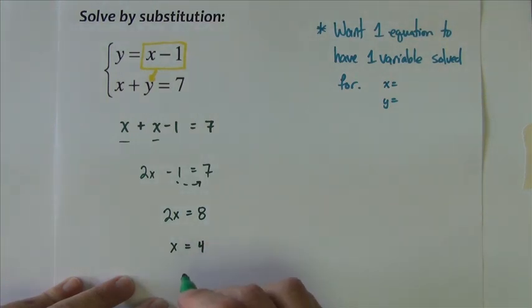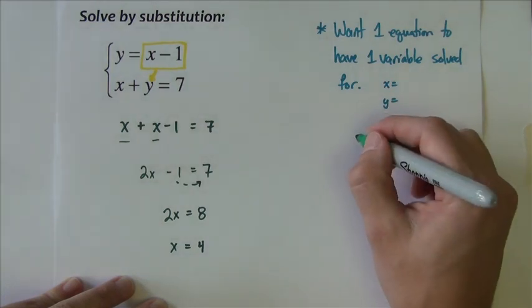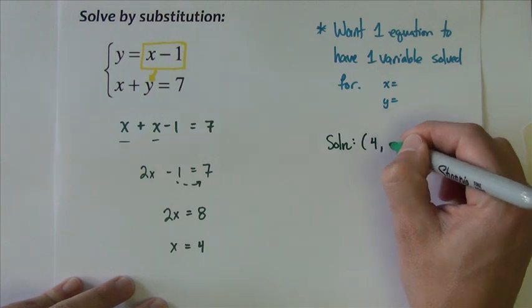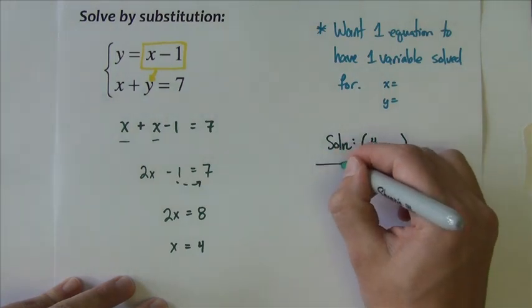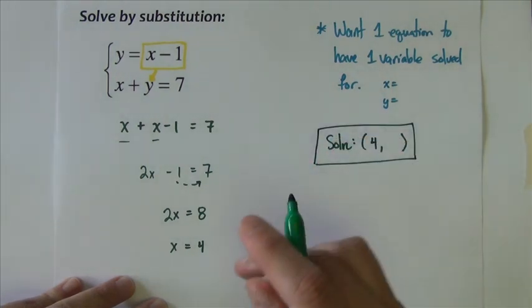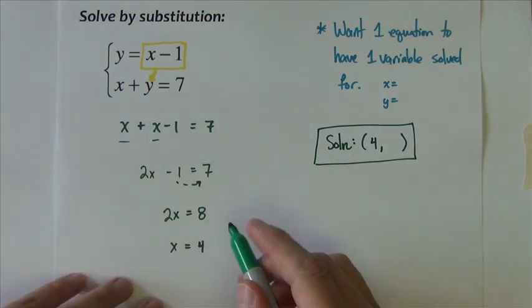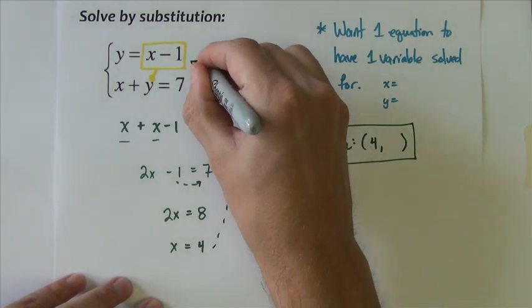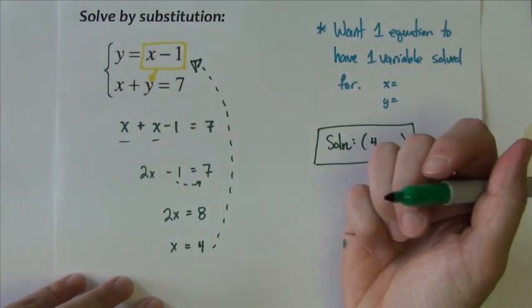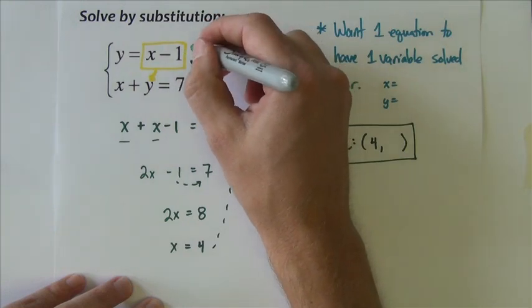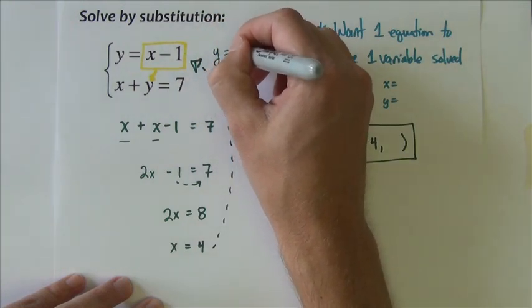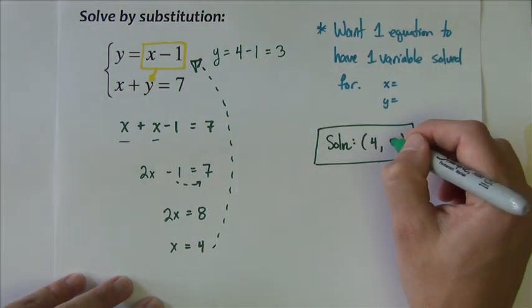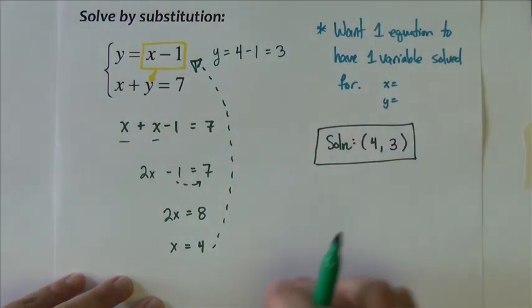Now that's not done yet because what we're looking for is a point. The solution should be an ordered pair point. Right now we only have half of the point. But if you come back up here to this equation that said y equals x minus 1, therefore y equals 4 minus 1. Y equals 3. There's our solution, 4 comma 3.